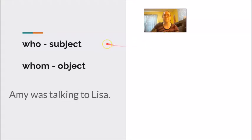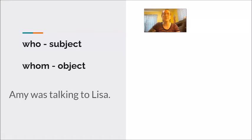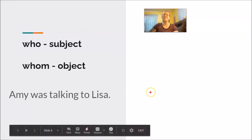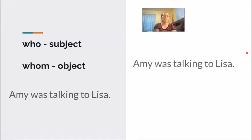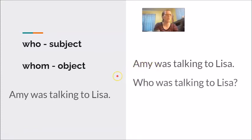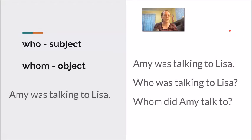Last practice: Amy was talking to Lisa. Action verb: was talking. Who does the talking? Amy — subject. Who got the talking? Lisa — object. Take away the subject, Amy, and we say who. Who was talking to Lisa? Take away the object, Lisa, and we say whom. Whom did Amy talk to?